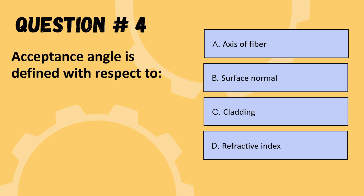Next question: acceptance angle is defined with respect to — options are axis of fiber, surface normal, cladding, or refractive index. The correct option is A: axis of fiber.